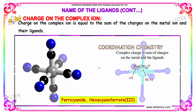And finally, the charge on the complex ion. The charge of the complex ion is equal to the sum of the charges of the metal ion and its ligands. For example, if the metal ion is plus 3 and the ligands contribute minus 6, then adding them gives a charge of minus 3 on the complex ion.